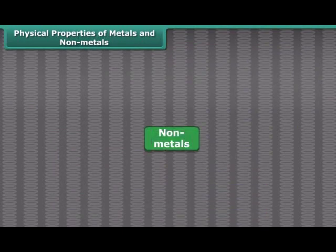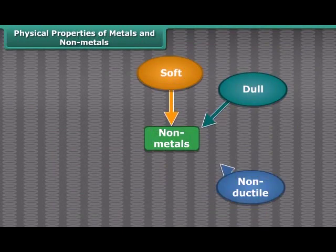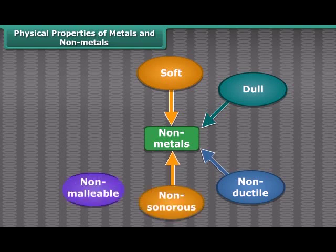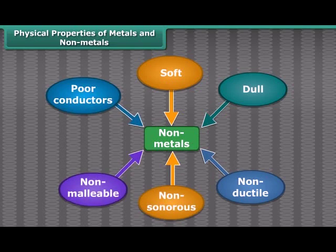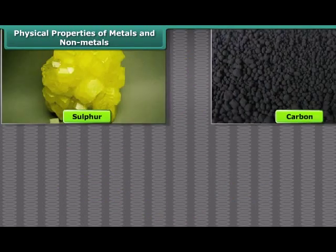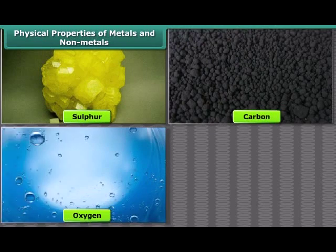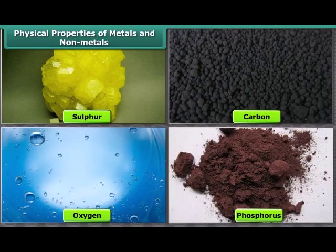Non-metals like coal and sulfur are soft, dull, non-ductile, non-sonorous, non-malleable, and poor conductors of heat and electricity. Sulfur, carbon, oxygen, phosphorus, etc. are the examples of non-metals.